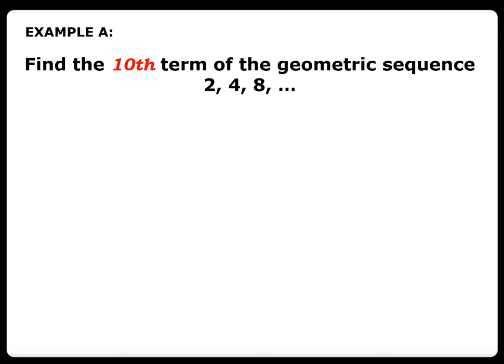Example A: Find the tenth term of the geometric sequence 2, 4, 8. The given: a_1 is 2, r is 2, n is 10. How do we get r? Simply divide 4 by 2 or 8 by 4, which is equal to 2.